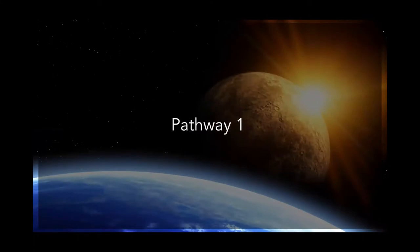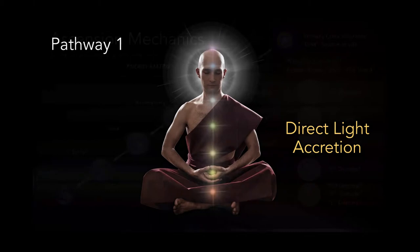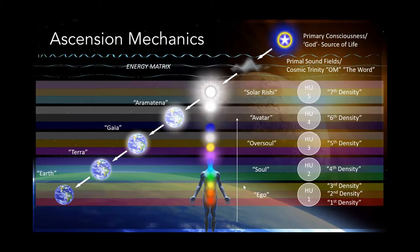Pathway number one — consistent with what we've just gone over — this has to do with what is referred to as direct light accretion. As you know from what I've just described, with the process of dimensional ascension, if you're down here in your ego, as you assimilate the energies of the fourth dimensional band — which happens gradually — this is an increase in vibratory rate. The oscillation rate is increasing as we move up the vibrational scale, bringing in light from the fourth dimension.